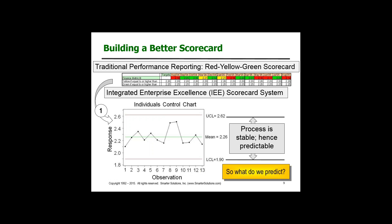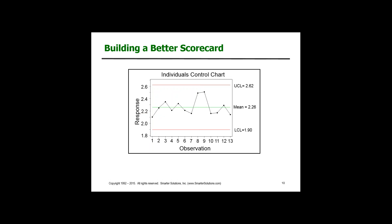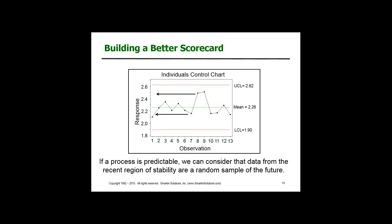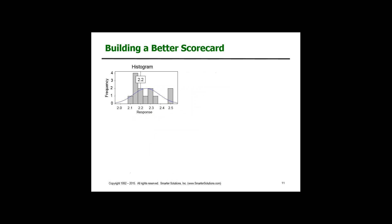So the next obvious question is: what do you predict? What we're going to do is take the data from the recent region of stability and build the distribution — that's the distribution of what I expect in the future. I'm going to turn that distribution on its side. The 2.2 value represents the frequency of time that I believe we're going to have red, not only now, but in the future.